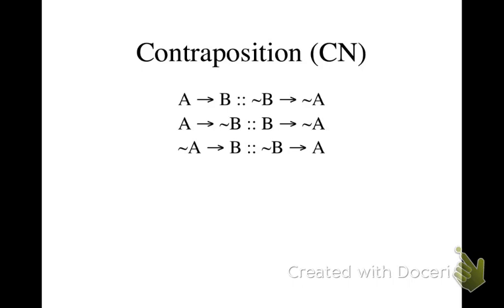And then we just have two versions that let us deal with conditionals that have a negation on one of the, either the antecedent or the consequent. And you can see, it should make sense why that works the way it does. And that just lets us avoid some double negations that would show up otherwise.